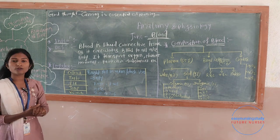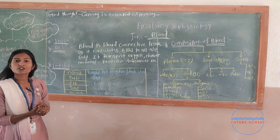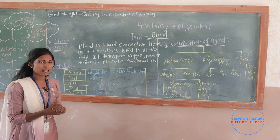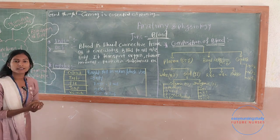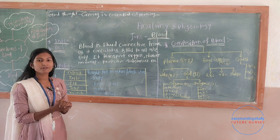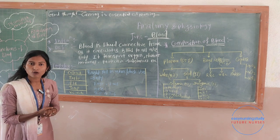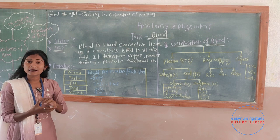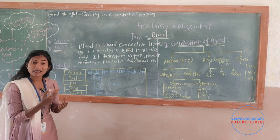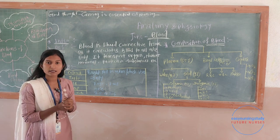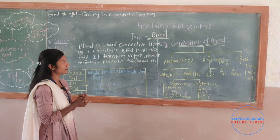The fourth property of blood is temperature. The normal temperature of blood is 38 degrees Celsius. The next property is viscosity. The viscosity of blood is 3.5 to 5.4. Why is blood viscous? Because of the presence of solid substances like blood cells — RBC, WBC, and platelets.